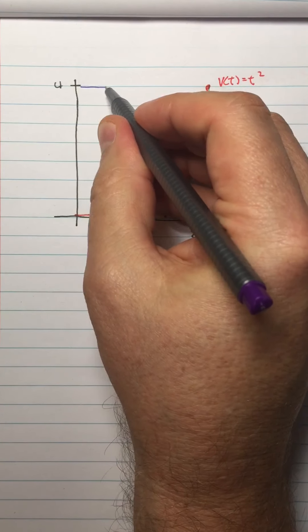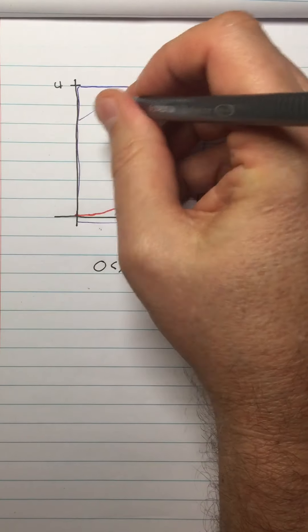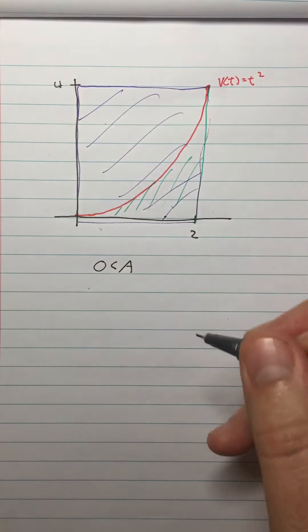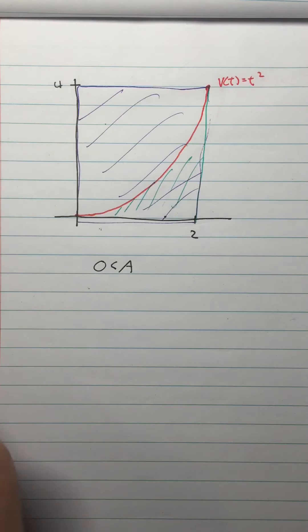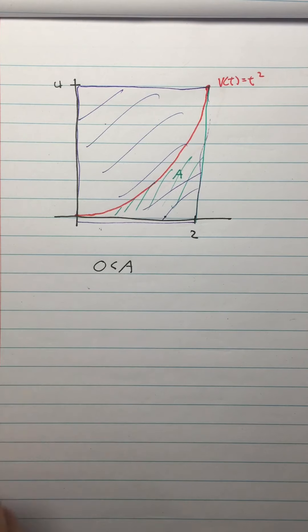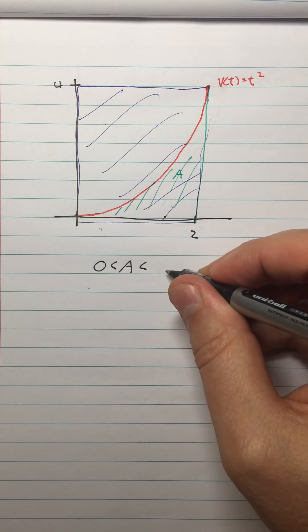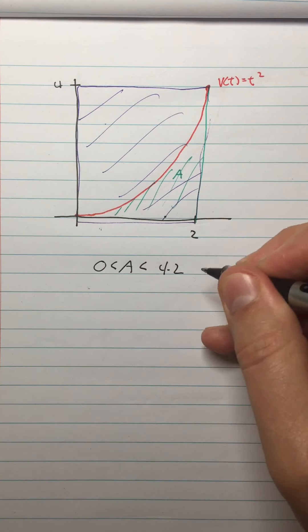If I drew the full rectangle that enclosed the entire curve, that would be greater than the area I'm looking for. My area is this green part in here. And that full area is 8. So this area is less than four times two, which is eight.